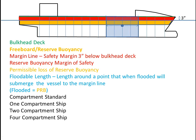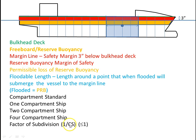These are all terms that will be manipulated by the naval architect when designing the ship. There's a thing called the factor of subdivision, and this factor of subdivision is the reciprocal of the compartment standard — so it's one over the compartment standard. The number for the factor of subdivision will always be one or less than one.